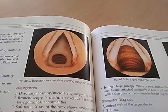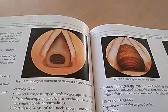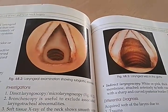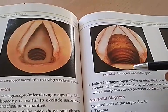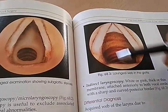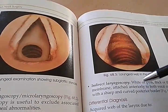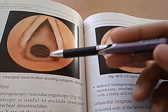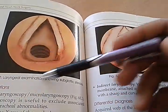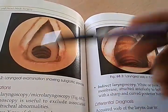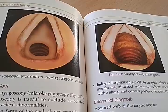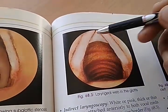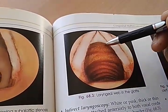Laryngeal examination showing subglottic stenosis. Here is a laryngeal web in the glottis — this one is the web. Laryngeal web in the glottis and this is showing stenosis — stenosis is narrowing. This looks narrow, and the web is here, you can see it.